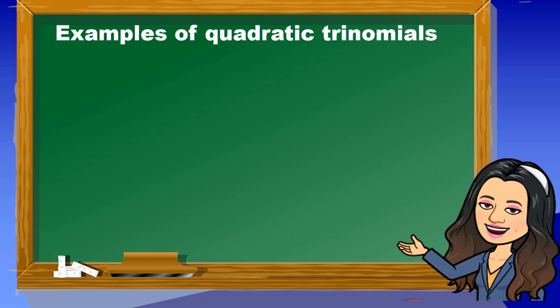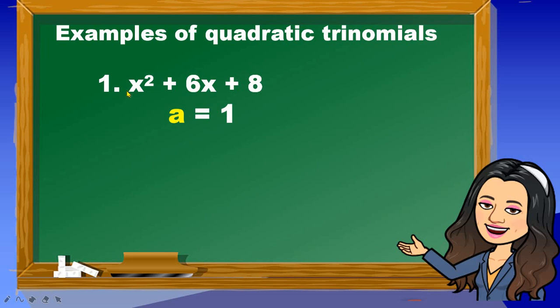Here are examples of quadratic trinomials. Number 1: x squared plus 6x plus 8. What are the values of a, b, c on this expression? a is equal to 1 — that is the numerical coefficient of x squared. b is equal to 6 — that is the numerical coefficient of x. And c is equal to 8 — that is the constant term in the given expression.